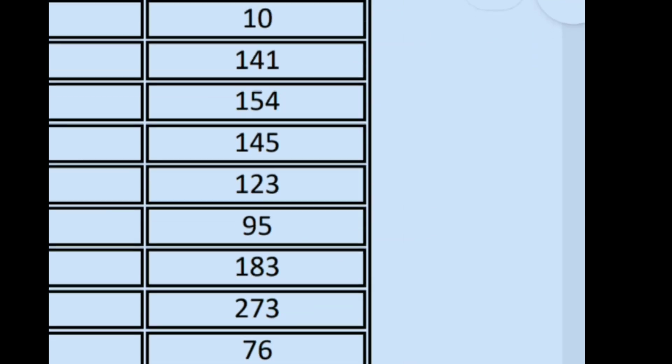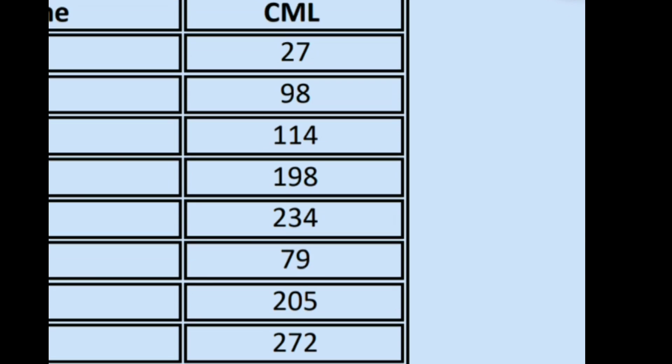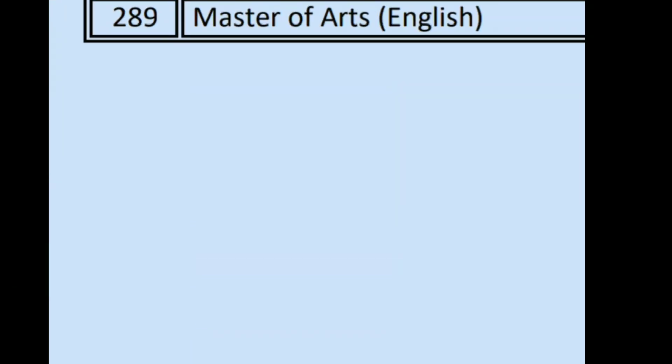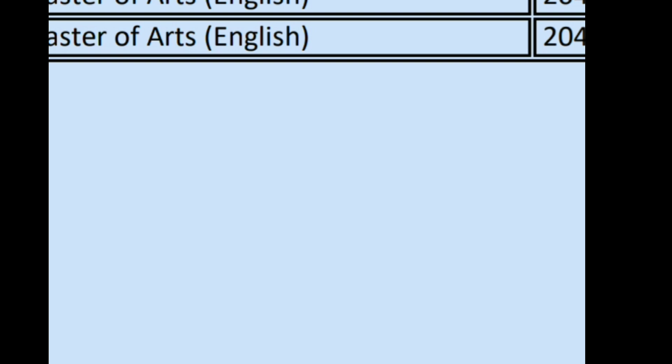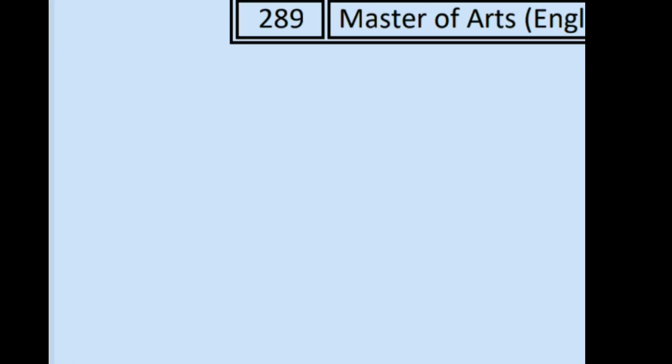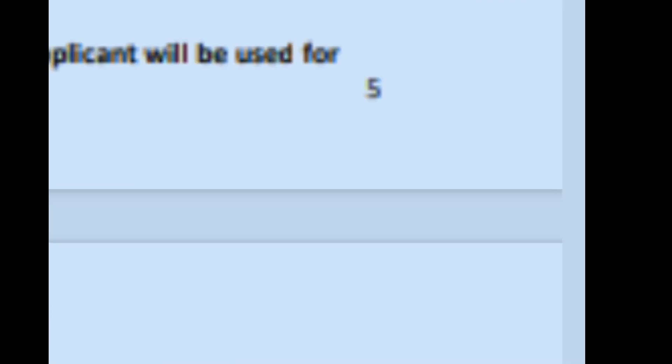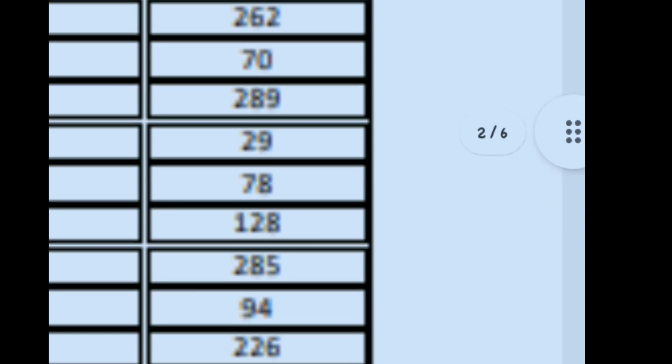If you have a rank, you will need to see how many total students appeared in that exam. In this example, I have made an example of MA English — there are 289 students who participated. You also need to see how many seats are available in the university. For MA English, only 60 seats are available. We can consider that the top 100 students who got a rank in the top 100 have chances of admission.